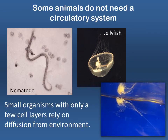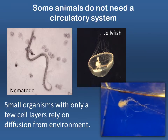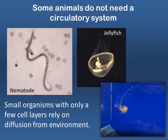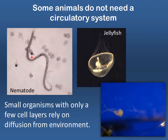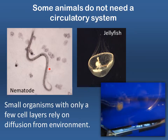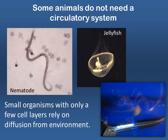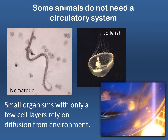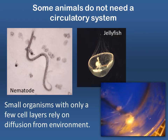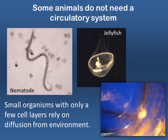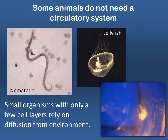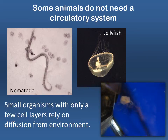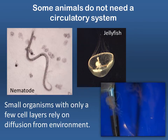Not all animals need a circulatory system. Very small organisms like nematodes, found mostly in aquatic soil habitats, or very thin organisms like jellyfish — seen here in the video — that are only a couple of cell layers thick, can acquire all the nutrients and gases they need by simple diffusion from the environment, and thus don't need a complex circulatory system.